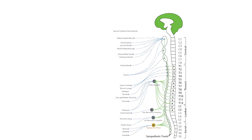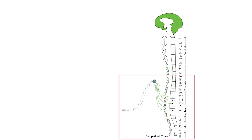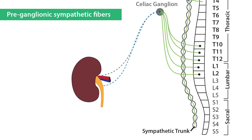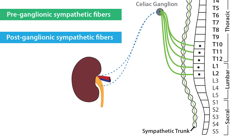The sympathetic fibers that innervate the kidney are divided into the preganglionic fibers, which are represented by the solid green lines, and the postganglionic fibers, which are represented by the dashed blue lines.